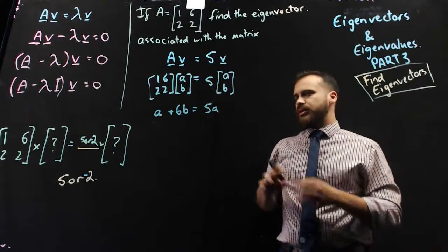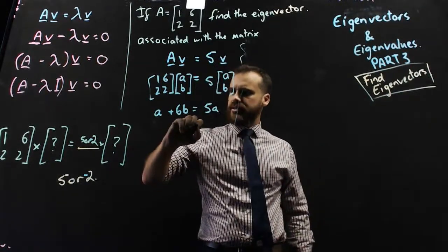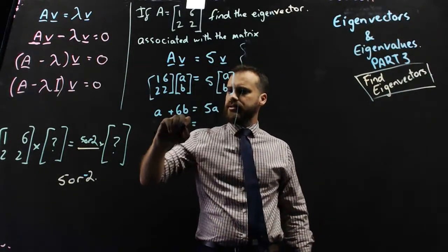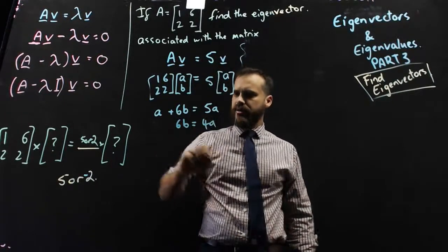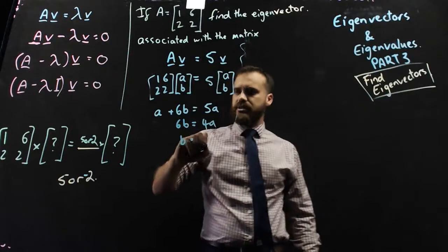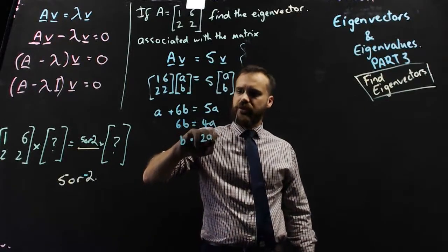All right, so now I can sort of rearrange that, and I can say that 6b is equal to 4a, and I can say that b is equal to 2a over 3.